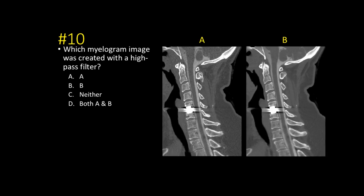Number ten: which myelogram image was created with a high-pass filter — A or B? Same patient. The answer is A, the high-pass filter or bone algorithm. You can see the vertebral bodies have a more well-defined, sharp border — higher resolution with more noise. Image B is the low-pass or soft tissue filter, where contrast is better but resolution is lower and there is less noise.